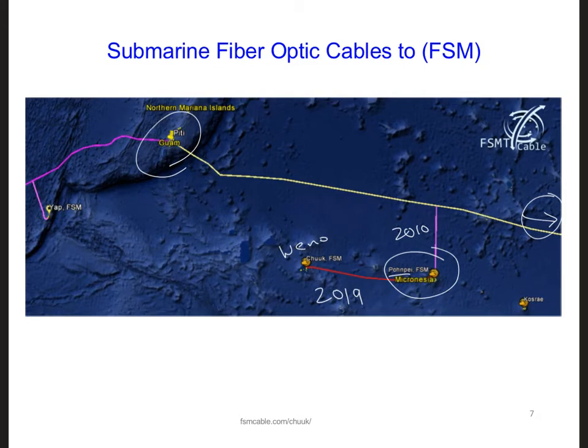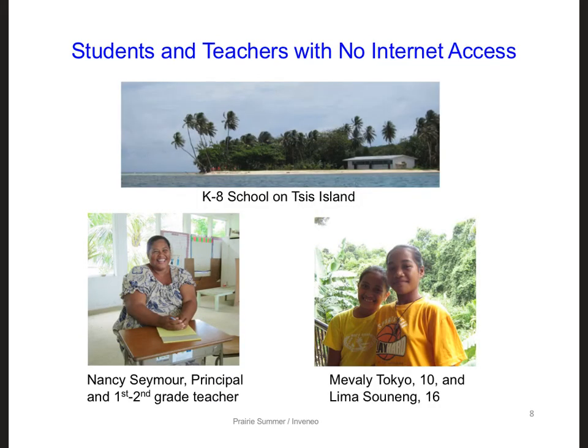Getting a fiber optic cable to an island is a big deal and very expensive, but even after this is accomplished, there is still the big job of connecting all the inhabitants on the island to that internet. In FSM, there are about 110,000 people living on 65 inhabited, quite small islands. For example, at a K-8 school on CIS Island, there are about 87 kids, five teachers, and no computers or internet access. On top of that, most of these 87 students have never seen or touched a computer before, and only about 1% have ever used a computer.